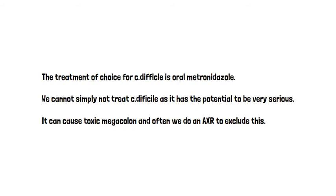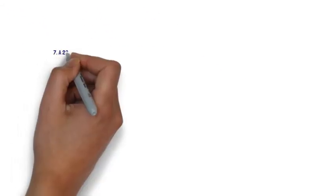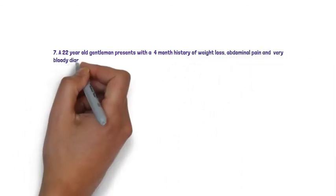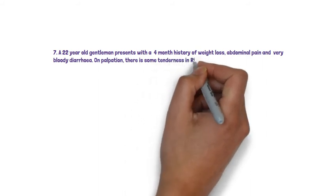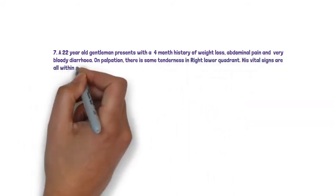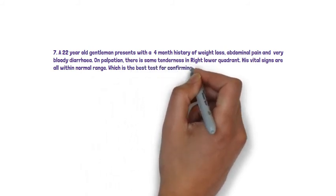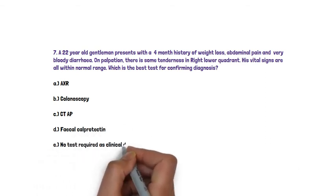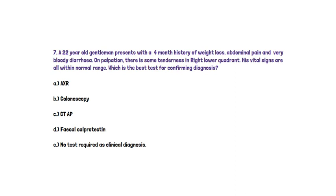Number 7. A 22-year-old gentleman presents with a four-month history of weight loss, abdominal pain and very bloody diarrhoea. On palpation there is some tenderness in his right lower quadrant. His vital signs are all within normal range. Which is the best test for confirming diagnosis? Options: A. Abdominal X-ray, B. Colonoscopy, C. CT abdomen and pelvis, D. Faecal calprotectin, E. No test required as it is a clinical diagnosis.